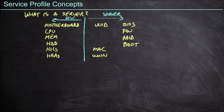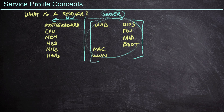So while the hardware is on the left, everything that really defines the identity and the purpose and how we manage and maintain a server is on the right side of the line. Furthermore, all of this can be defined inside of software. As a result, this set right here is what Cisco defines as a service profile.